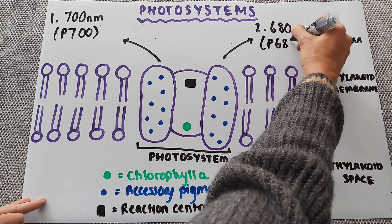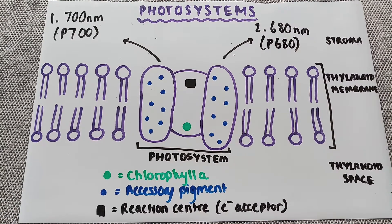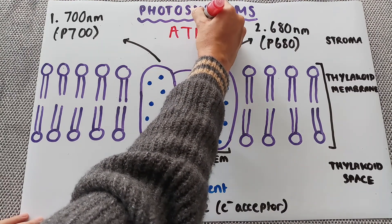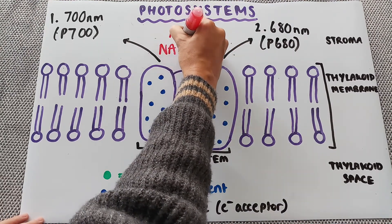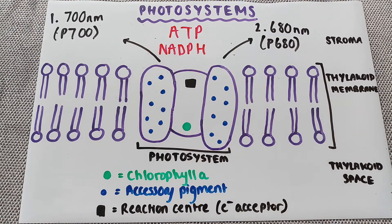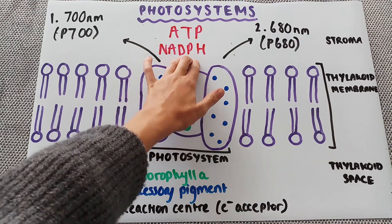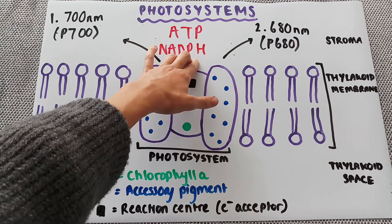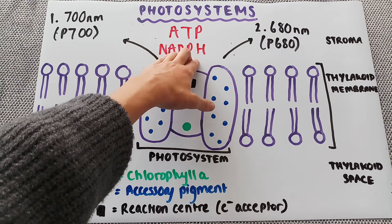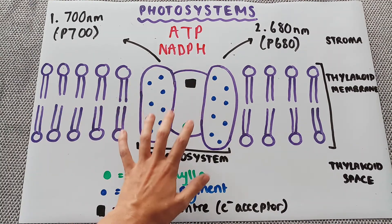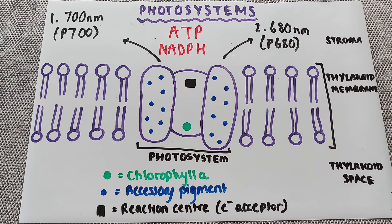These two photosystems work together to produce and transfer both ATP and NADPH, which is the electron acceptor for photosynthesis. These are the two products made from the light dependent reactions, which are then used in the light independent reactions. The photosystems are the complexes which start this whole process off.